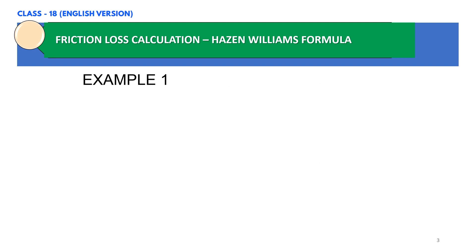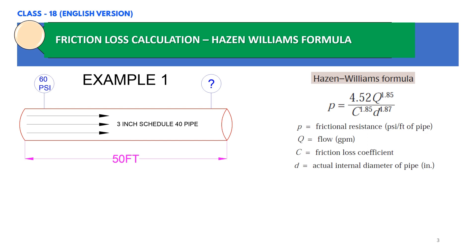Here we have the Hazen-Williams formula: P equals 4.52 times Q to the power 1.85, divided by C to the power 1.85 times D to the power 4.87. This is the standard formula used to calculate friction losses. P represents frictional resistance in PSI per feet of pipe, Q represents flow in gallons per minute, C is the friction loss coefficient, and D is the actual internal diameter of the pipe in inches, which can be found from the manufacturer's data sheet.